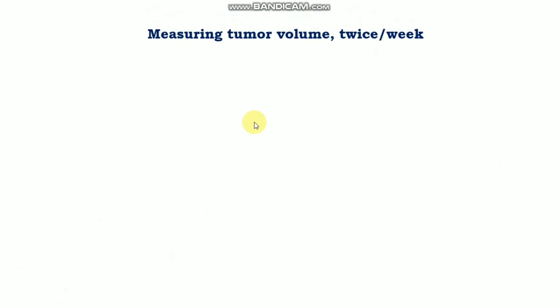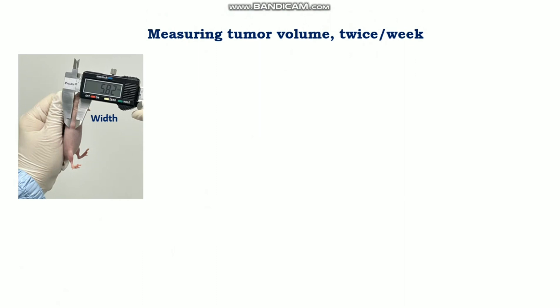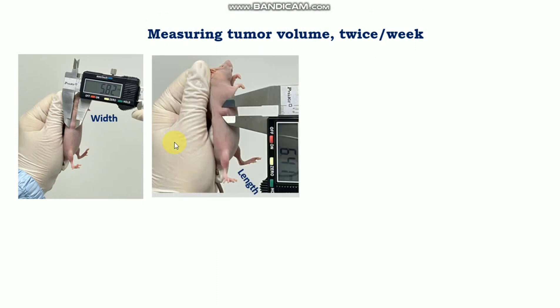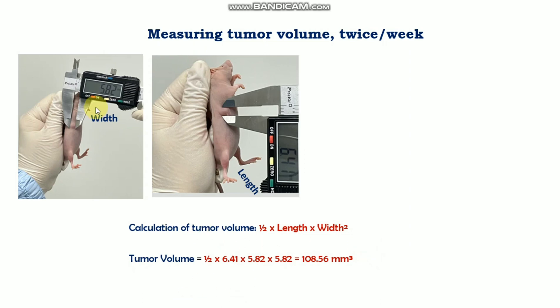After drug injection, you need to measure the tumor volume at least twice a week. To measure, first record the width of the tumor and then the length — the longer measurement is considered the length. The formula for tumor volume is: 0.5 × length × width². As shown in the vernier caliper reading, an example tumor volume calculation gives 108.56 mm³.